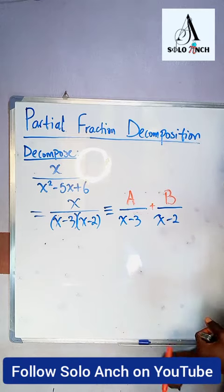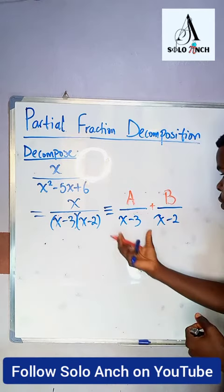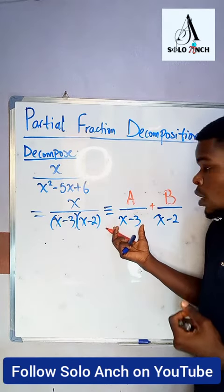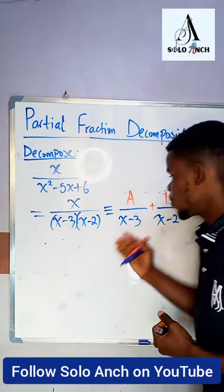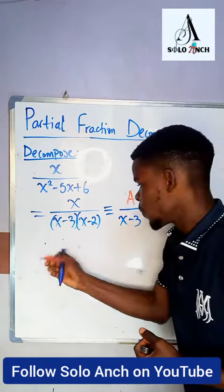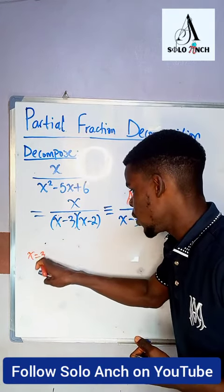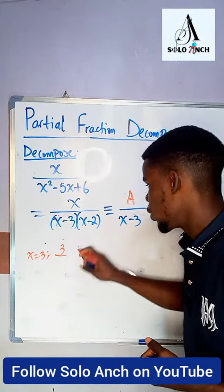So to figure out for this one, you'll substitute x equals 3 over here, covering this factor up. So when you cover up x minus 3, substitute x equals 3. You're going to have, that is for x equals 3, you're going to have 3 over 3 minus 2, which is just 1.